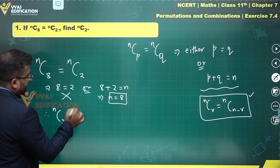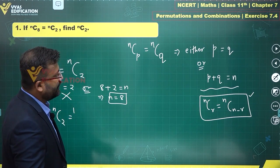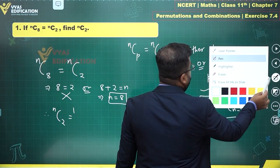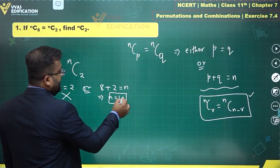Therefore, NC2 will become equal to... sorry, N equals 10 is what we'll get, not 8. Let's make that correction. This is 10. So this becomes 10C2.